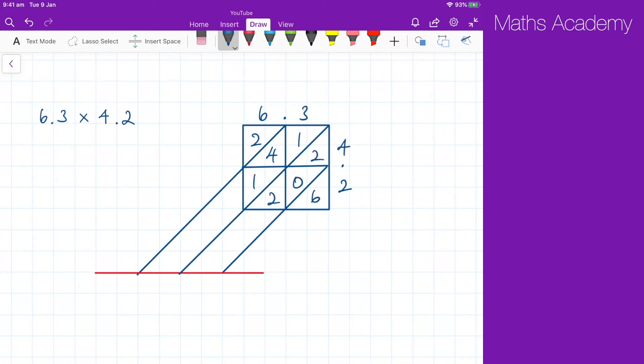And then add diagonally. We've got the 6. 2 and 2 is 4. We've got 6 here and 2. And finally, where's my decimal go? And along here. Follow the diagonal all the way down. And the decimal goes here. So 26.46.